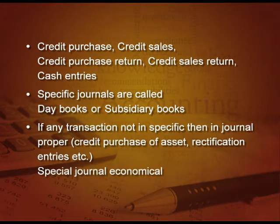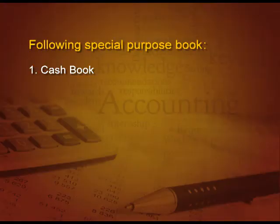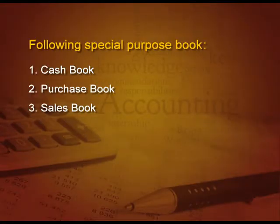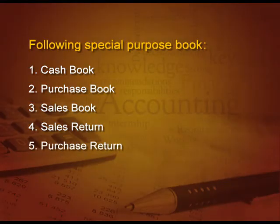Now these special journals are very economical. How many types of special purpose books are there? First, cash book, which records all the cash entries. Then purchase book, which records all the credit purchase entries. Then sales book, which records all the credit sales entries. Then sales return, credit sales return, purchase return, and finally journal proper — those entries which do not find any place in the above mentioned books are recorded in journal proper.